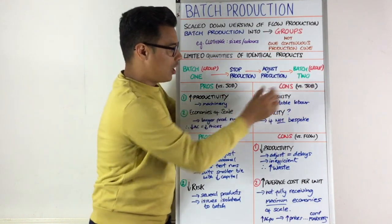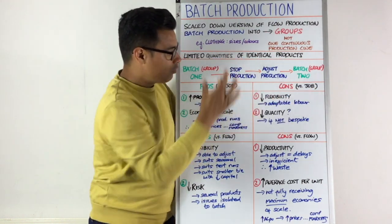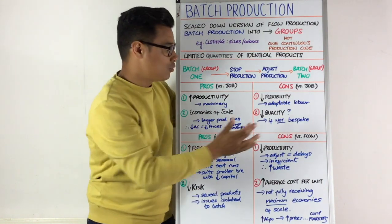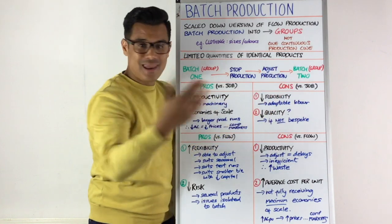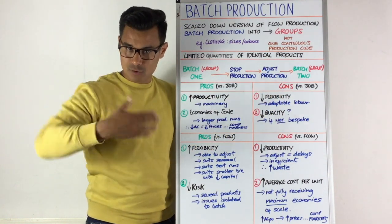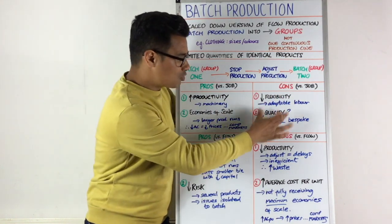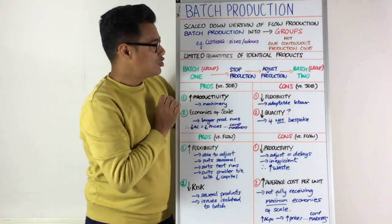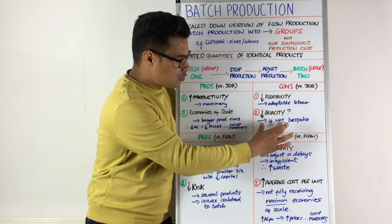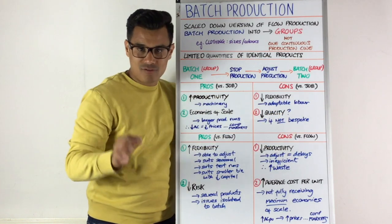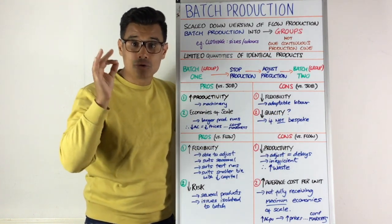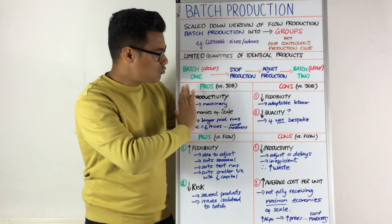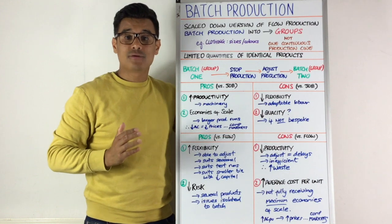In terms of the cons versus job production, batch production is likely to be less flexible, because job production uses labour and is very adaptable — it's all about a bespoke product. You could also argue that quality might be worse with batch production, because job production is all about a real custom-made, bespoke, high-quality product.